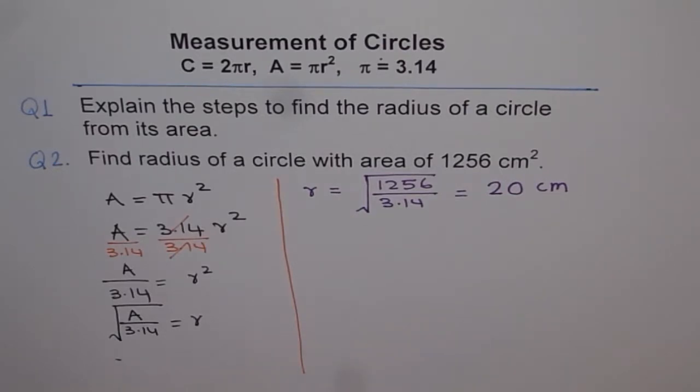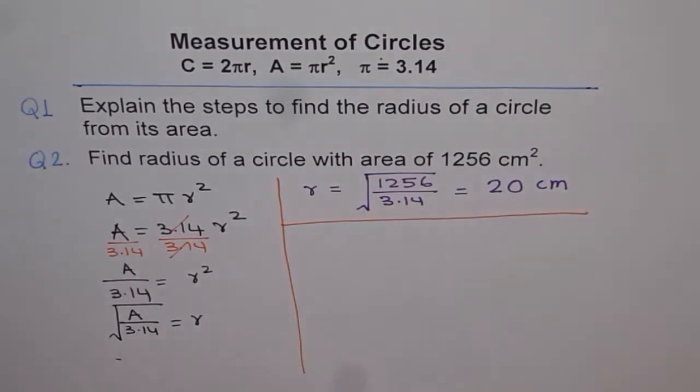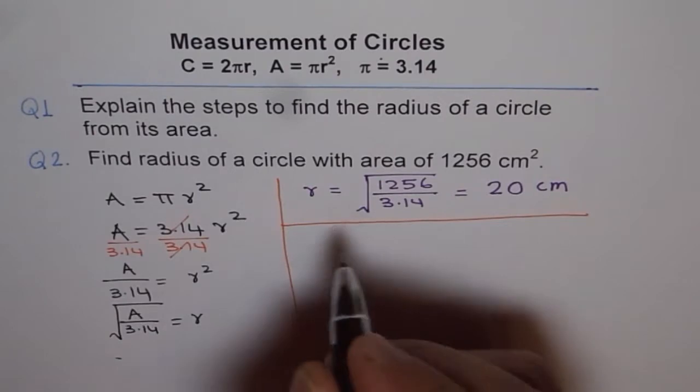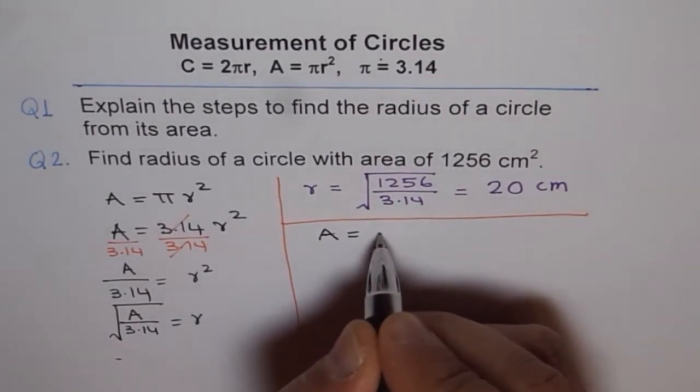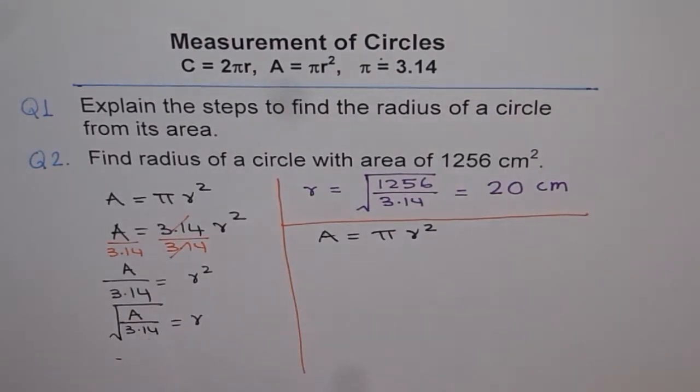But let me again show you the steps using this value. So that is kind of a review. Now we say area is pi r square. So area is pi r square because many times you will not remember this formula. So you need to follow the steps.